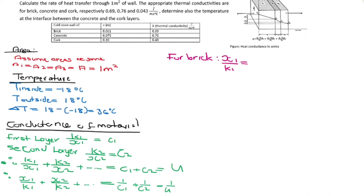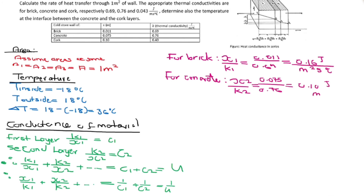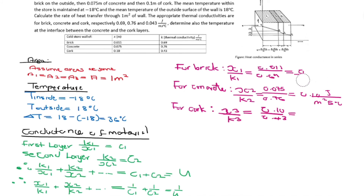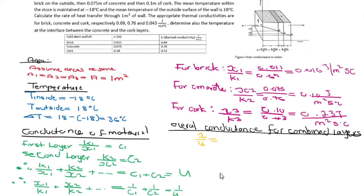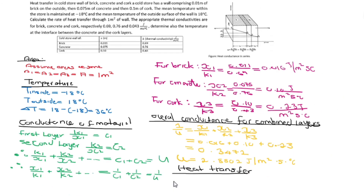Now substitute into the conductance formula for each layer. For brick: X1 over K1 = 0.011 over 0.69, giving 0.16. For concrete, you get 0.1. For cork, you get 2.33. The units here are meters squared per watt (or equivalent thermal resistance units). Now, using the overall conductance formula, add all the material layer resistances together. Since we have everything expressed as X over K, the sum gives 1 over the overall conductance. Rearrange to make the overall conductance the subject.